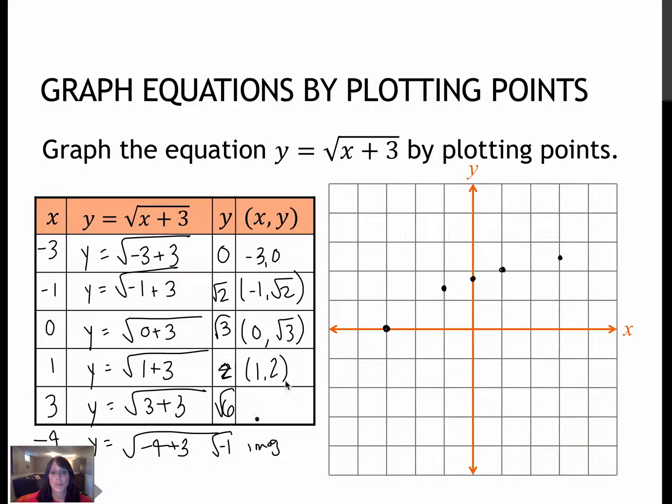We know that imaginary numbers, we can't graph those. So this graph starts at this point and continues like this. So there's nothing below this. And again, we'll get more into that later when we focus on the graphing, but right now we're just plotting points. This is what that square root would look like.